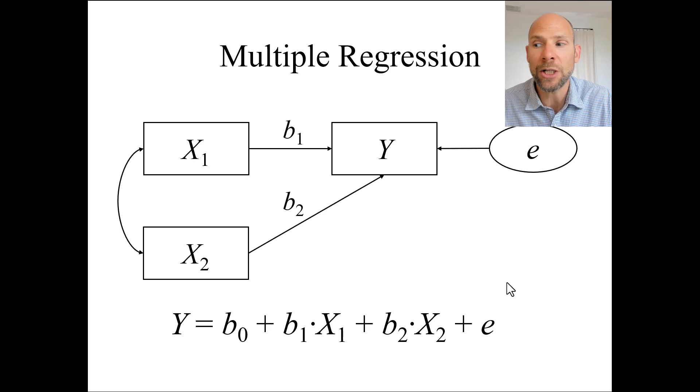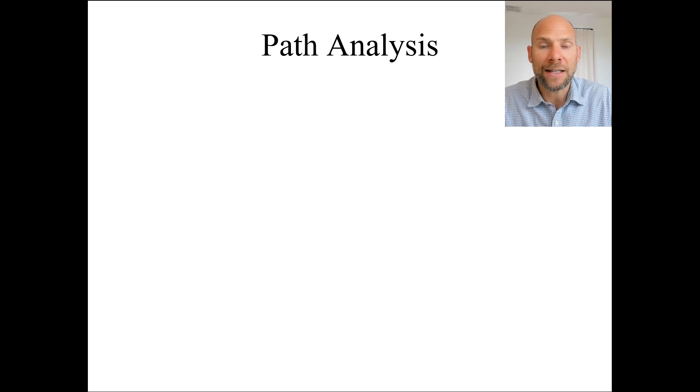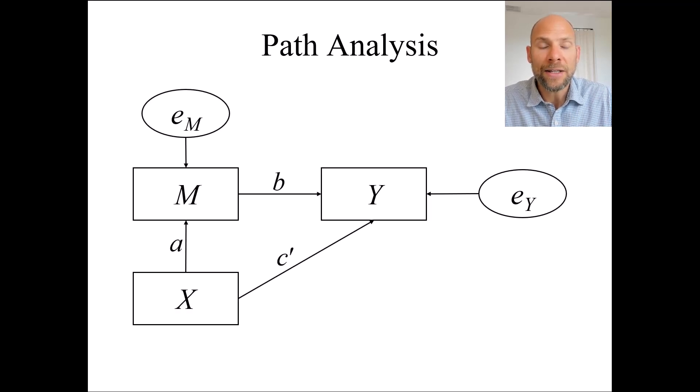Now, how does multiple regression analysis relate to path analysis? In path analysis, the difference is that we have multiple dependent variables. Regression analysis only allows for a single dependent variable, whereas in path analysis, we can have multiple dependent variables and multiple independent variables. And not only that, we can also have variables that we call intermediate variables or mediator variables that are in between a so-called exogenous variable and an endogenous variable.